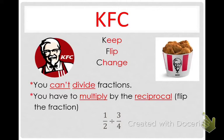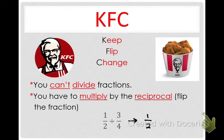It says one-half divided by three-fourths. You're not allowed to divide fractions — that's where KFC comes in. Keep, Flip, Change. We're going to keep the first one, which is one-half. Flip the second one — so three-fourths will become four-thirds. And then change the operation: because I'm not allowed to divide, what's the opposite of divide? Multiply. So we will change the operation to multiply.